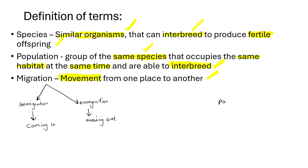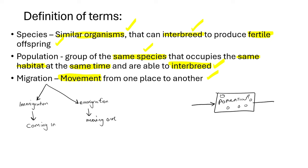Let's say this is our population — there are ants inside here. When we say that the ants are experiencing immigration, it means a foreign ant is entering into that population. So immigration means coming in. Emigration means moving out — one individual is moving out of the population. That is emigration.